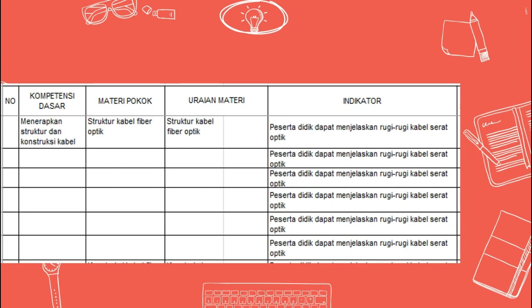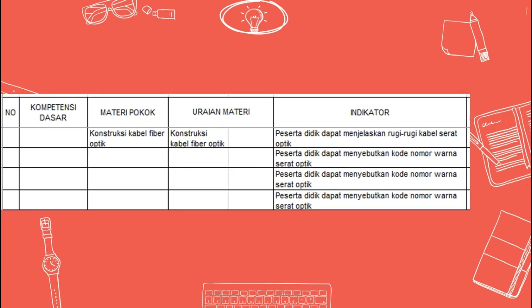Menerapkan struktur dan konstruksi kabel. Untuk materi pokok dan uraian materinya yaitu struktur kabel fiberoptik. Untuk indikatornya menjelaskan rugi-rugi kabel serat optik. Di dalam kabel serat optik terdapat rugi-rugi yang banyak sekali, sehingga ada beberapa soal yang diminta untuk menjelaskan rugi-rugi dari kabel serat optik.